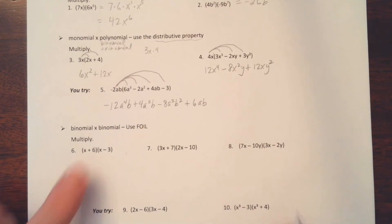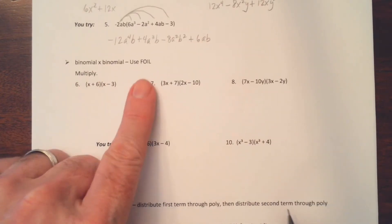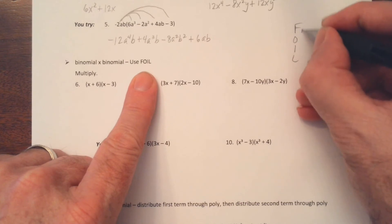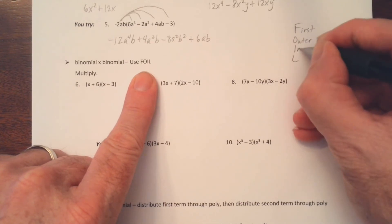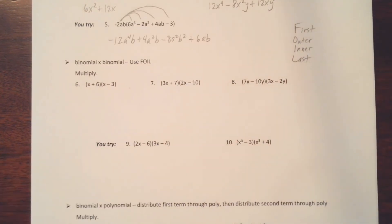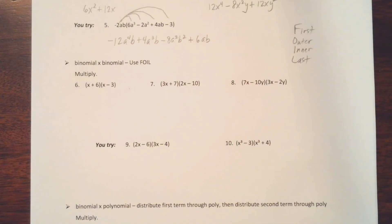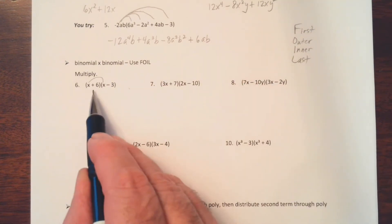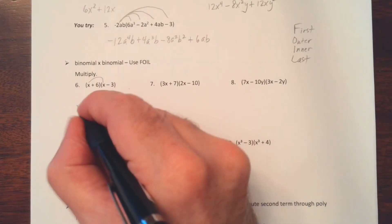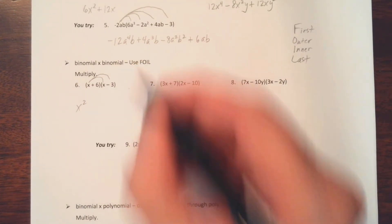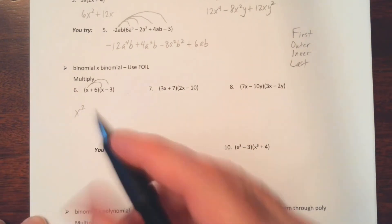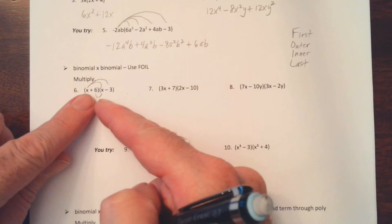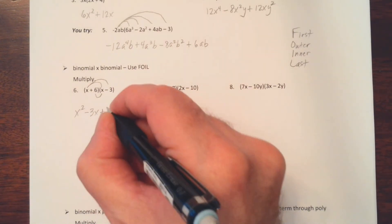Let's move on to binomial times a binomial. We'll use FOIL — an acronym where F stands for first, O stands for outer, I stands for inner, and L stands for last. This helps us know how to multiply a binomial times a binomial. We multiply the first terms: x times x gives us x squared. The outer terms: x times negative 3 gives us negative 3x. The inner terms give us positive 6x.